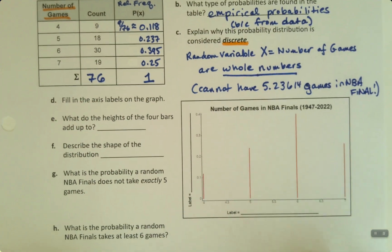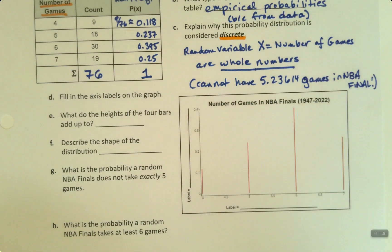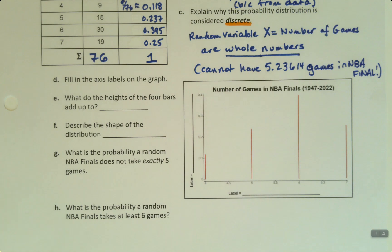You cannot have 5.23614 games in an NBA Final. It doesn't work like that. So that's the key. It can't be decimals. That's the difference between discrete and continuous.